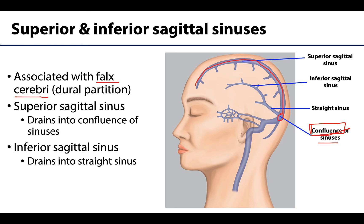The inferior sagittal sinus runs in the inferior concave free border of the falx cerebri. It will join with the great cerebral vein to form the straight sinus.